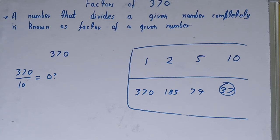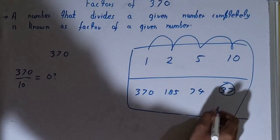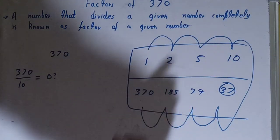And the set of factors for the number 370 will be 1, 2, 5, 10, 37, 74, 185, and 370.